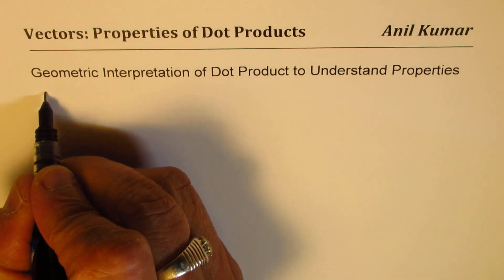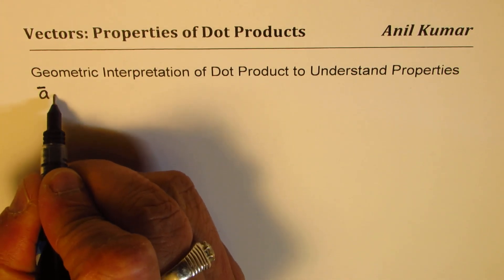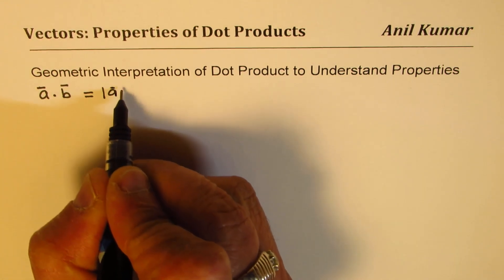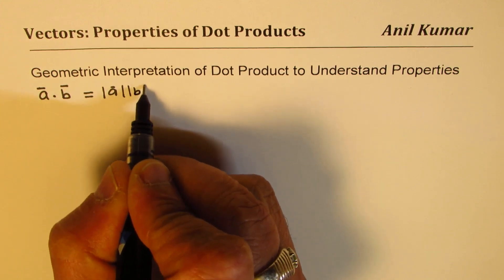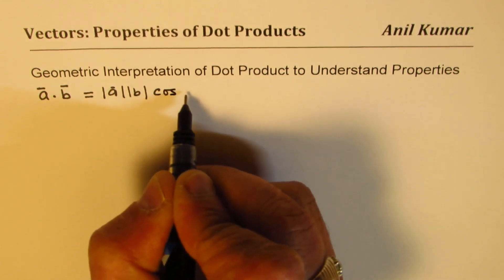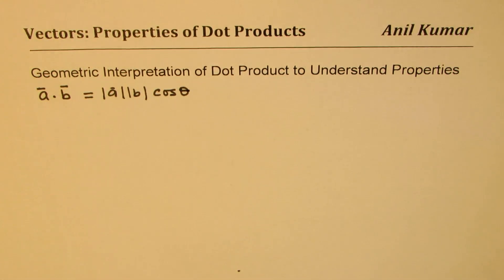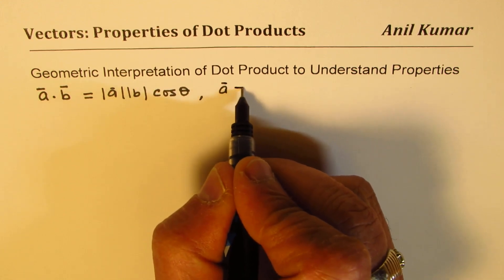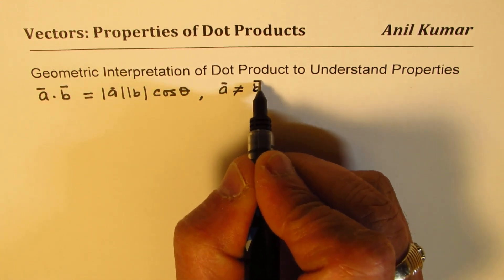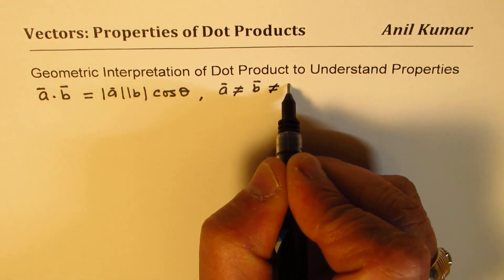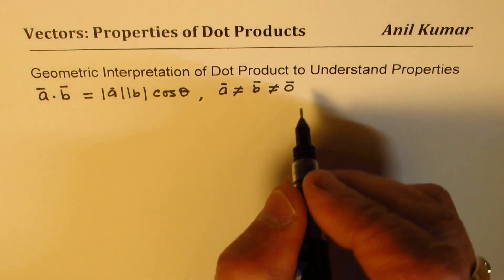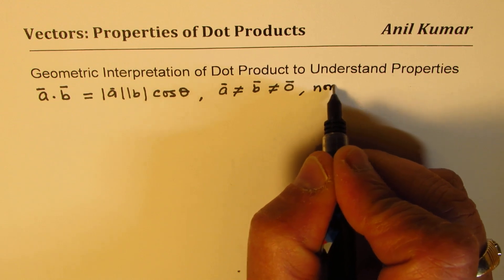What we know is that if there are two vectors a and b, then the dot product is defined as the product of their magnitudes times the cosine of the angle between them. Whenever we write this, we are also assuming that vector a and vector b are not equal to the zero vector — we are concentrating on non-zero vectors.